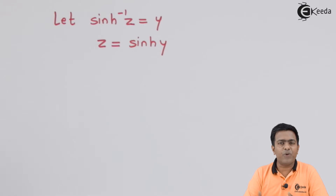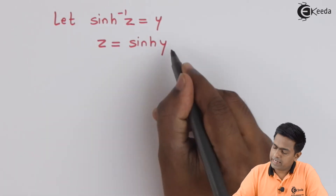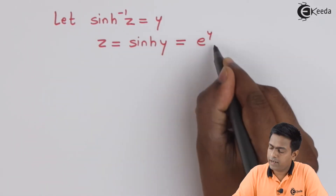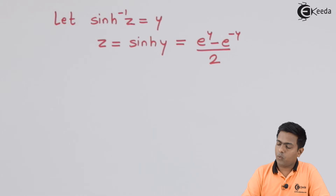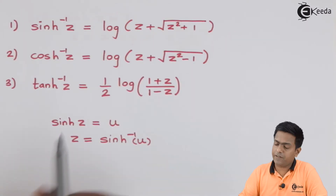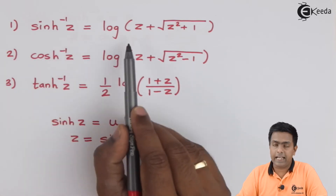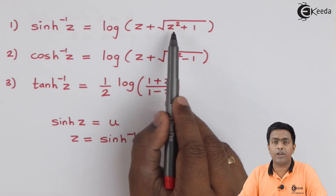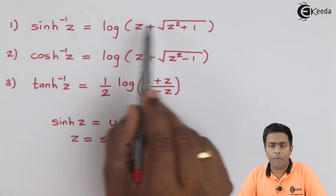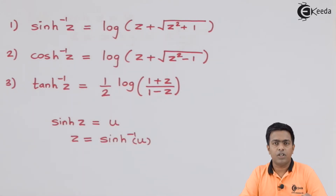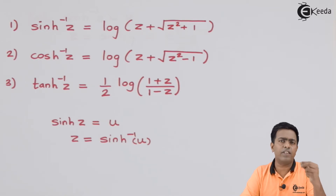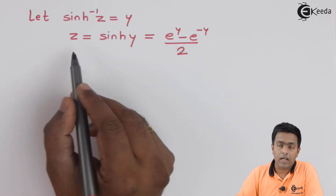We know the value of sinh(y) in terms of the exponential function — that is Euler's formula — which is (e^y − e^(−y)) / 2. The reason for using this formula is that the answer for sinh⁻¹(z) contains a log term, and to obtain a log term it is easiest to start from the exponential function. So we can say z = (e^y − e^(−y)) / 2.